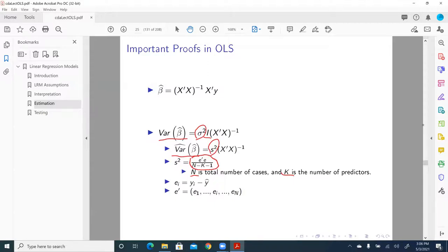So basically, it's n minus k if k includes that unit vector. And here, just a very quick precursor to the error term. So here, in the numerator, we have e prime e.